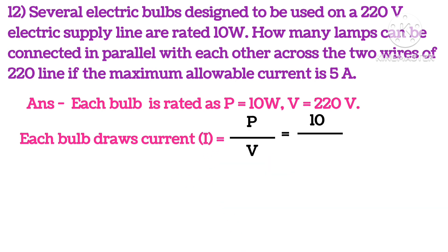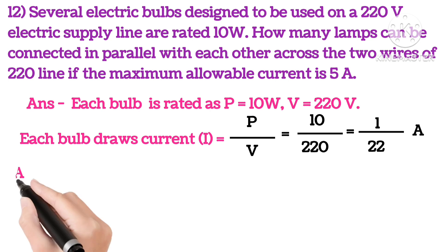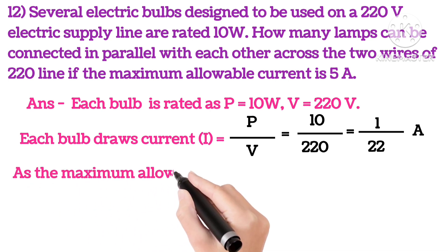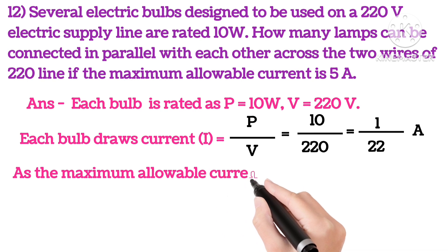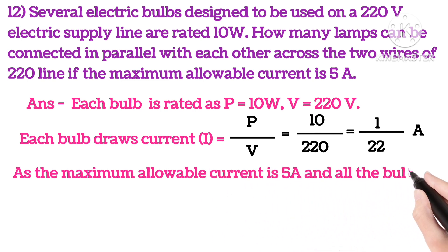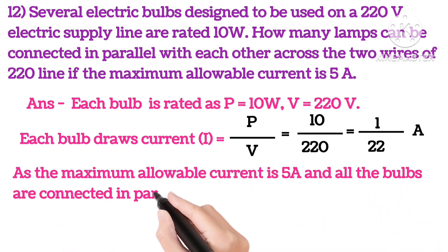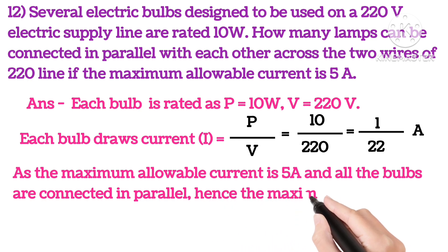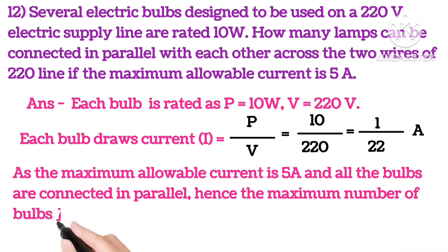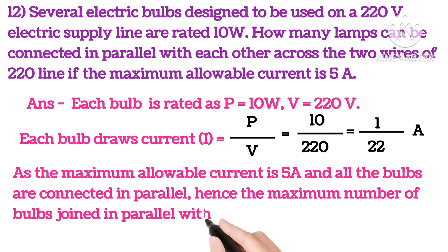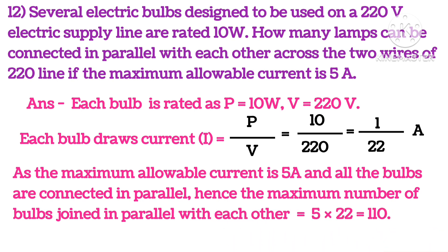So each bulb is rated as power 10 watts and voltage 220 volts. So the current will be I equals P upon V. Putting in the values, we get current 1 by 22 A for each bulb. As the maximum allowable current is 5A and all the bulbs are connected in parallel, the maximum number of bulbs is 5 into 22, that is 110.